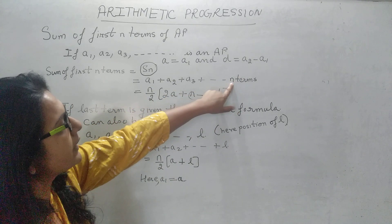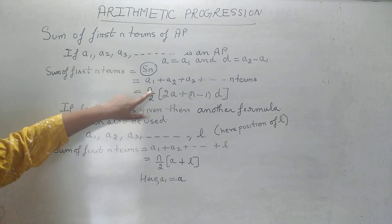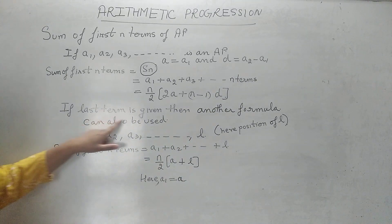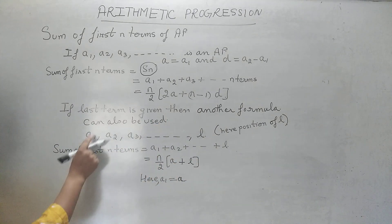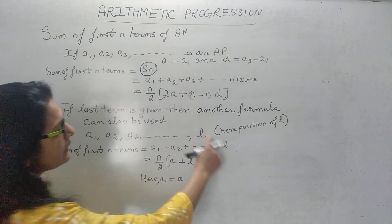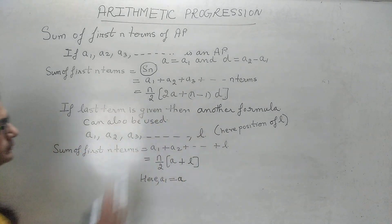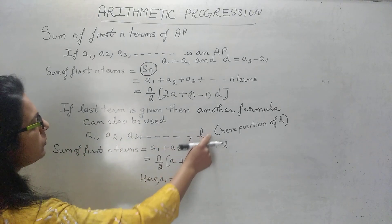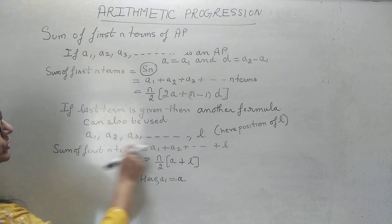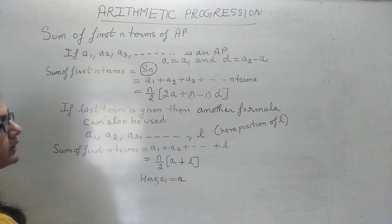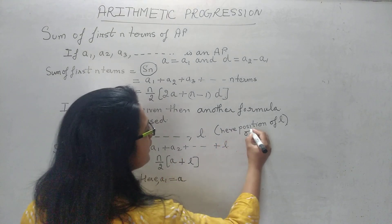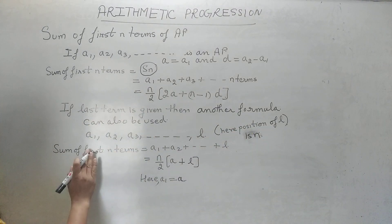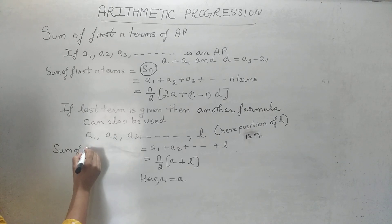Is that clear? Now n can be any value — we can find the sum of 2 terms, 3 terms, 4 terms, 5 terms. Now suppose the last term of the sequence is also given. If the last term l is given, we first find its position. Suppose the position of l is n, then instead of the sum of first n terms, we can write the sum of all these terms using the last term.